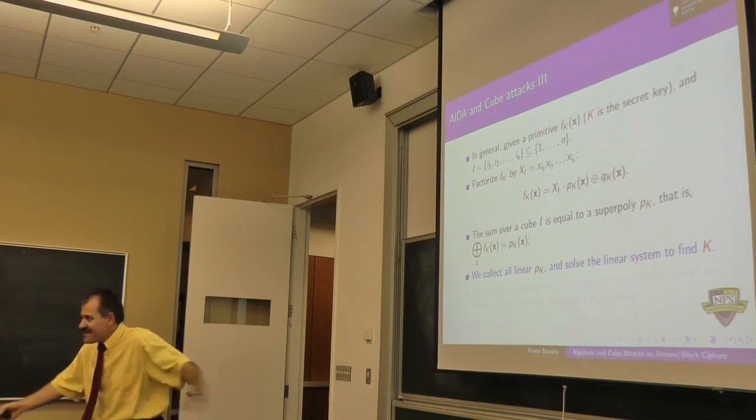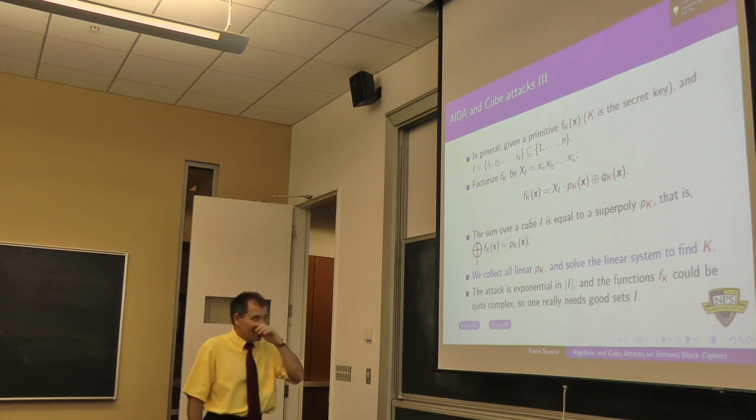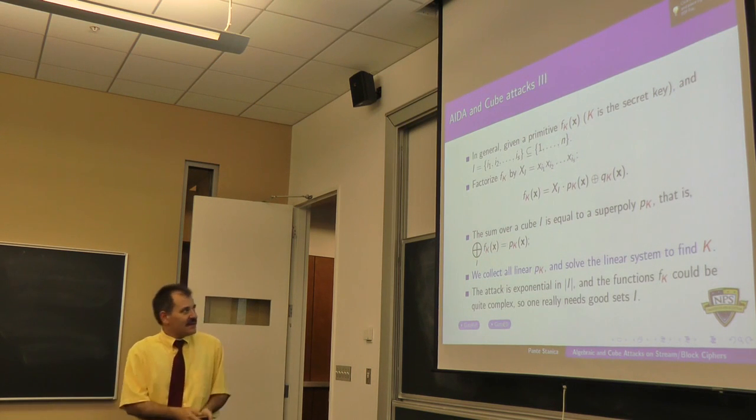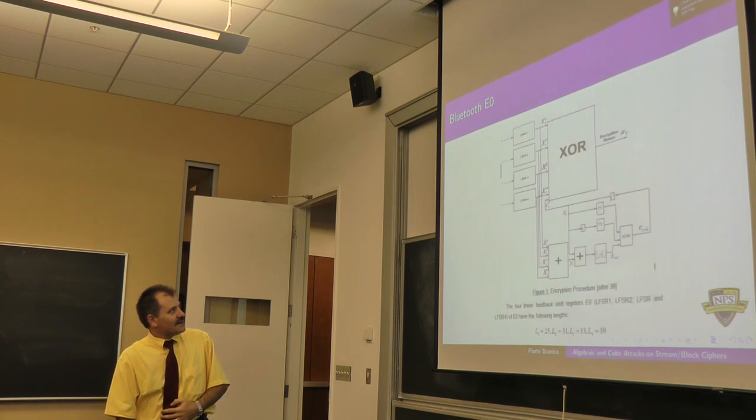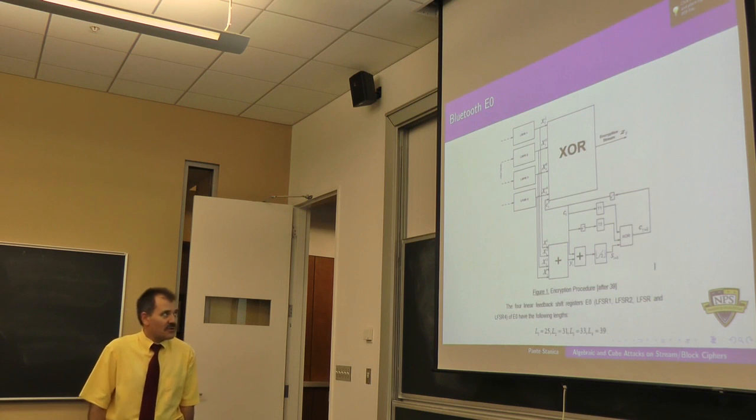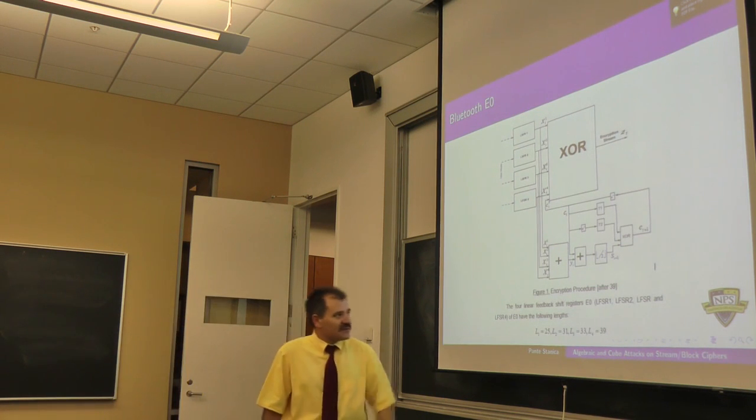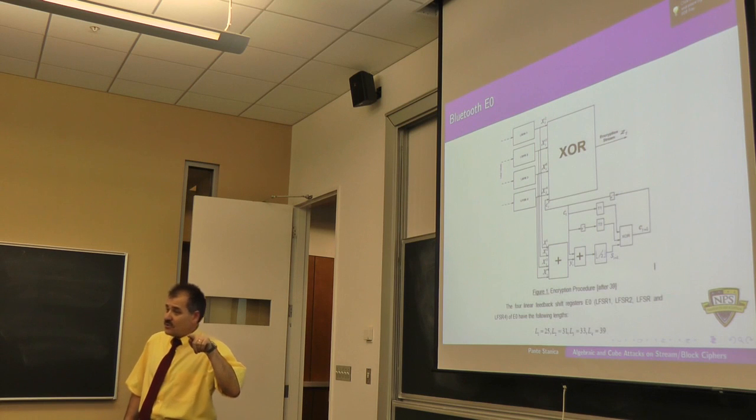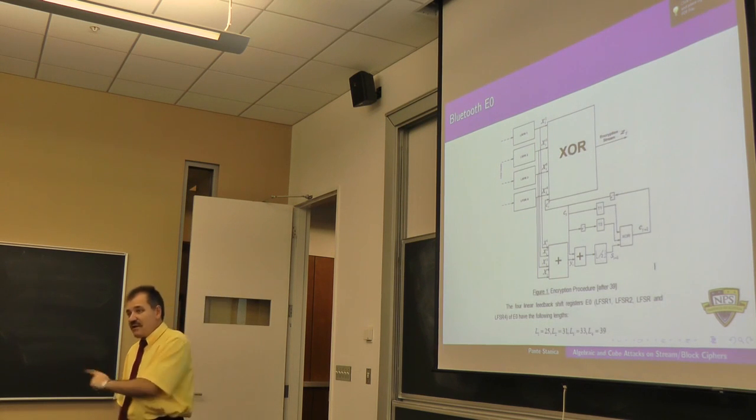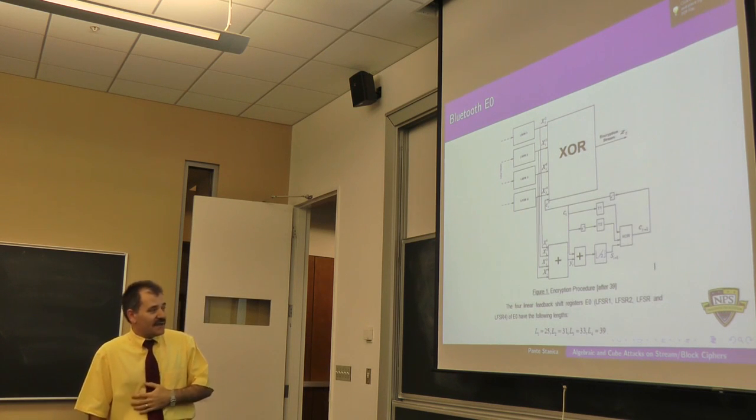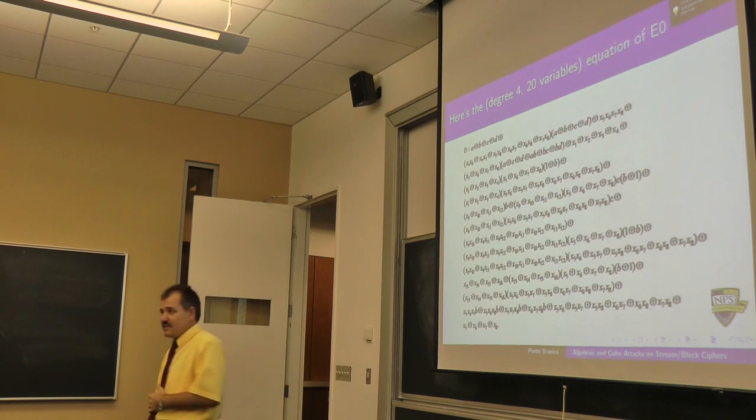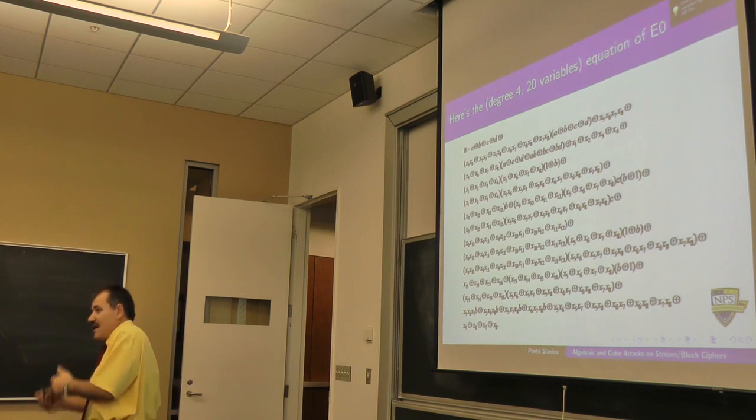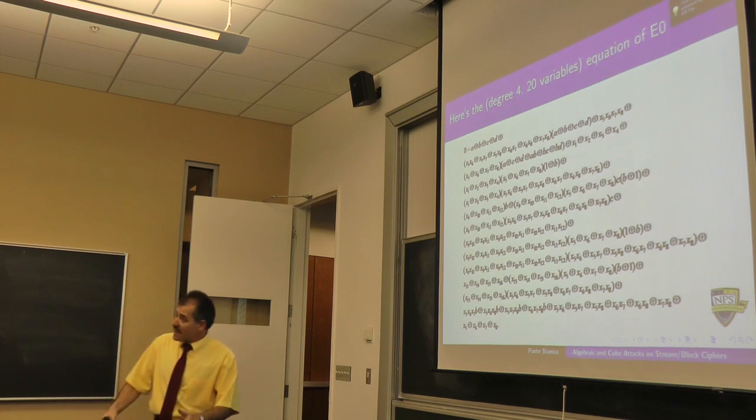Does it work? You always ask this question. Does it work? Well, actually it does work. We did use this attack. This is the Bluetooth E0 protocol with four LFSRs based on primitive polynomials. I asked one student, two months after Dinor and Shamir posted the paper, why don't you look at the cube attack applied to the Bluetooth protocol. The reason I thought it would be successful is because the Bluetooth protocol is described by this four-degree polynomial with 20 variables. How difficult would it be to analyze this thing?